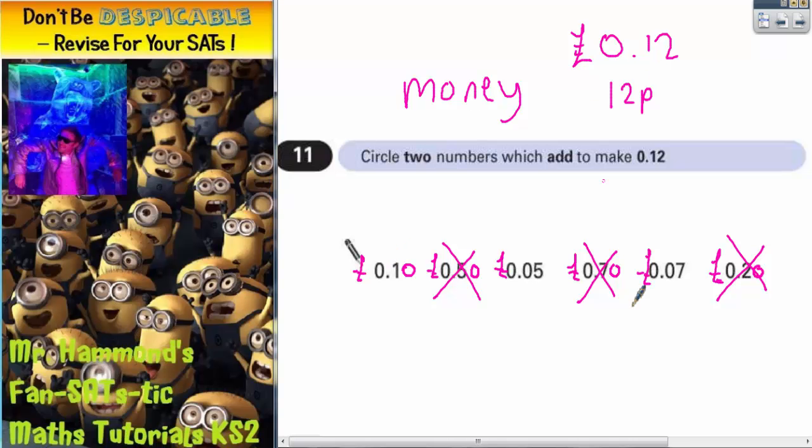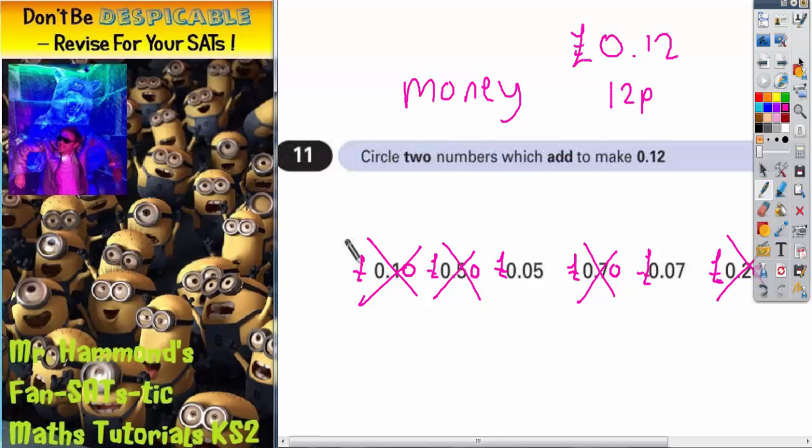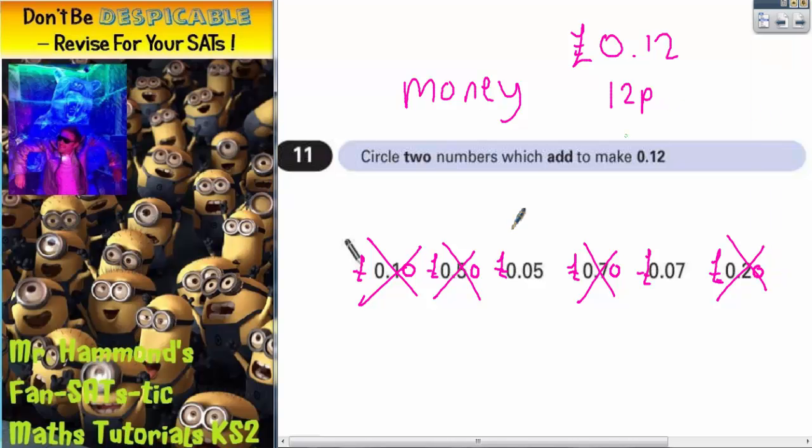And now there's only two left. So the only two left is those two. So 0.05 and 0.07 - they are the two that we need to circle.